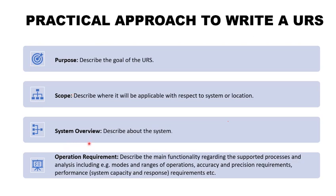Next is system overview — describe the details of the required system. For example, if procuring an HPLC and software, elaborate on the different modules of the HPLC and its use, such as analysis of raw material or finished product samples. Also define how the system will be controlled by the software, how data collection will be done, how data transfers to the server, expectations related to reports, how online calculations will be done, and how data will be acquired in case of network failure.